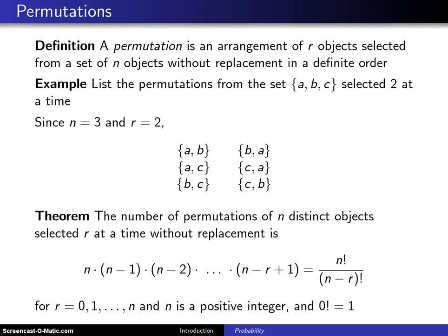So here's the definition. A permutation is an arrangement of r objects selected from a set of n objects without replacement and in a definite order.